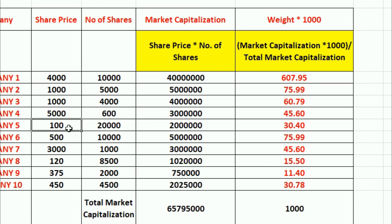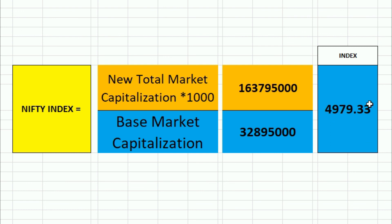Again I will change some values to increase the index — suppose now we have 20,000 shares and the value becomes 5000. Now this company has the highest impact because its market capitalization is very high. Based on that, instead of 2000 the index is now 4900. Every second, share prices change, and based on that all market capitalization values are calculated at the back end — and that is how the Nifty price changes. This is the concept to calculate the Nifty index. If you have any doubts, you can ask me in the comment section and I will definitely answer your question.